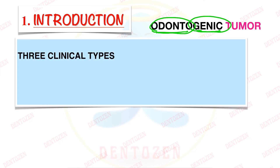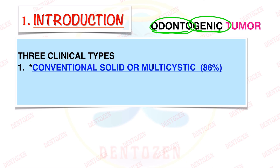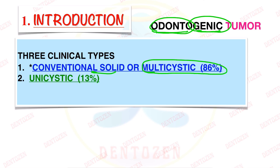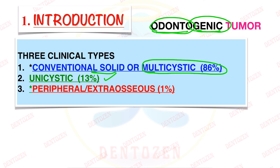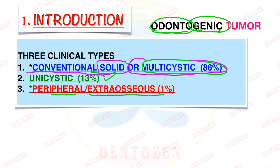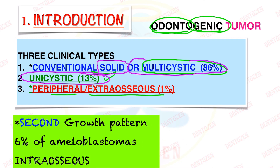In our last video, we discussed that they can be of three types: conventional solid or multicystic type, which are the majority of Ameloblastomas; second is the Unicystic type; and third is the peripheral or extraosseous type. In this video, we are going to discuss the Unicystic type, which is the second growth pattern.